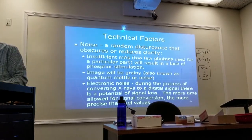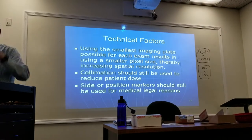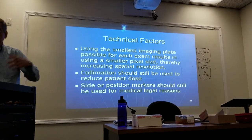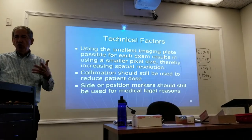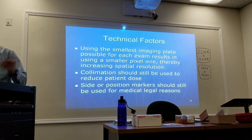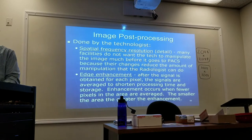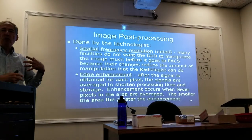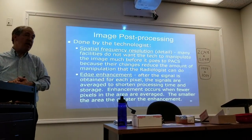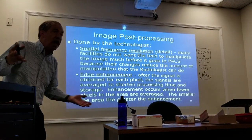To reduce scatter: get the cassette out of the room, don't use more kVp than you need since it causes more scatter, and use a small imaging plate with proper collimation to reduce patient dose. Side markers should also be used.